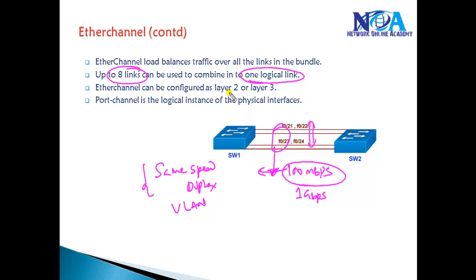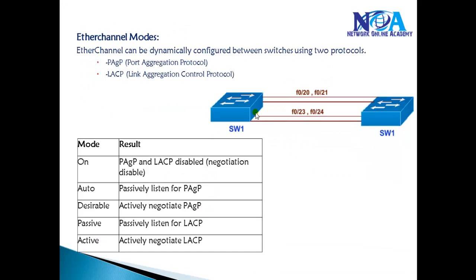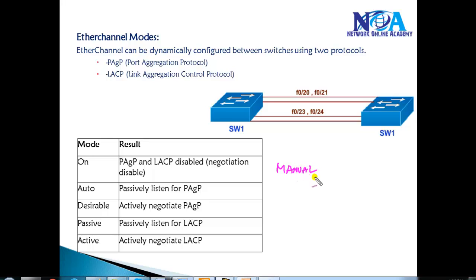EtherChannel can be used as a Layer 2 or Layer 3 interface. The port channel is the logical interface created by combining multiple physical interfaces. To configure EtherChannel, there are multiple options. The first is a manual EtherChannel, where you manually configure EtherChannel on both sides using the 'on' mode option. Apart from manual, you can also negotiate EtherChannel parameters dynamically.